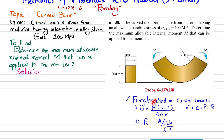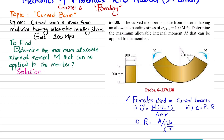Here, M is the moment; capital R is the distance from the center of curvature to the point where the neutral axis lies; small r is the distance from the center of curvature to any point where you want to find the stress; and r-dash is the distance from the center of curvature to the centroid of the cross-section. Let's find these one by one.